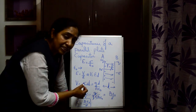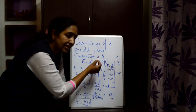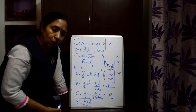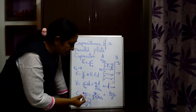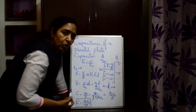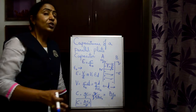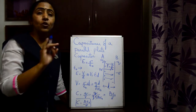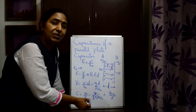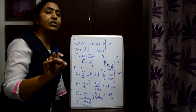Now sigma is the surface charge density, which can also be written as charge per unit area Q by A, where A is the area of the plates. So we get the expression for potential difference: V equals QD by A epsilon naught. Now the capacitance formula is C equals Q by V. Substituting V, we get C equals A epsilon naught by D. So capacitance is directly proportional to the area of the plates and inversely proportional to the distance between the plates.